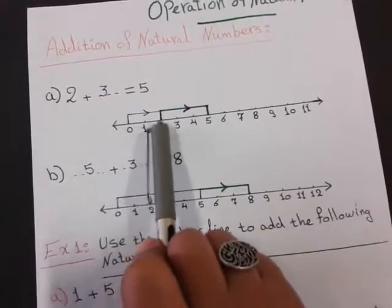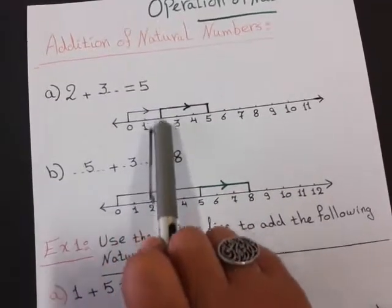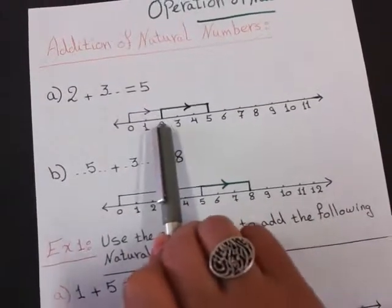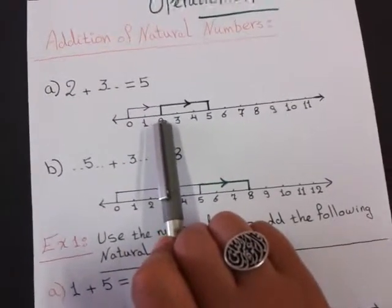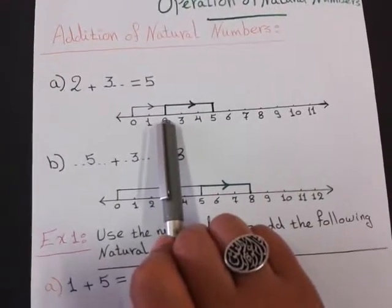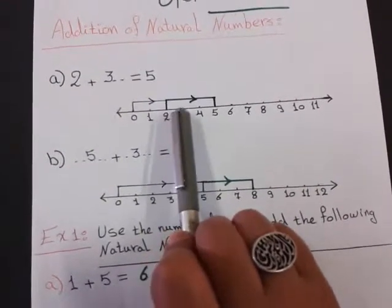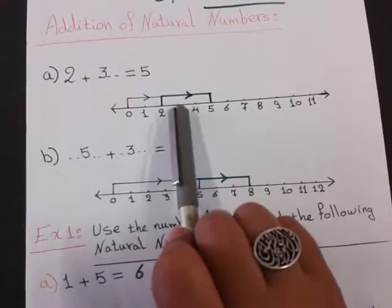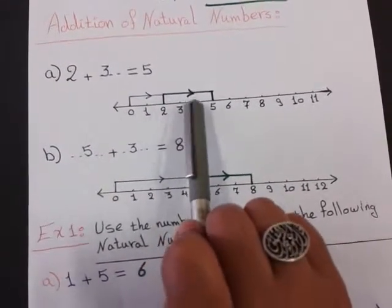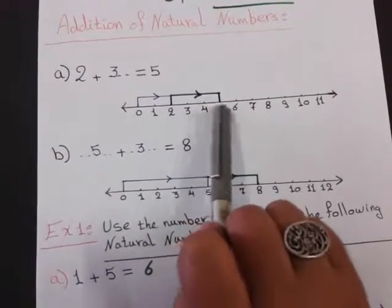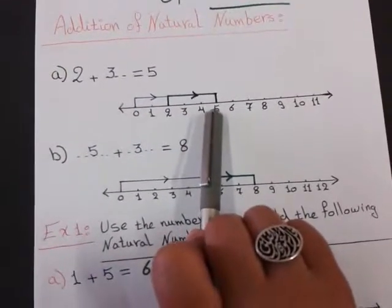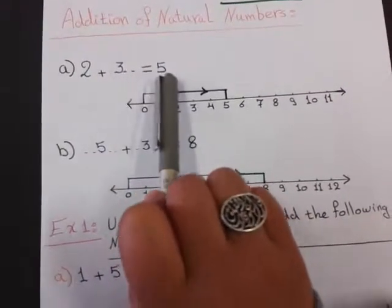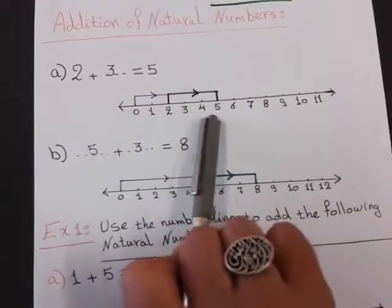I move one, two steps — so the first number is two. Then I look at how many units I need to move to reach number five. After two, I count: one, two, three — so I move another three steps to reach number five. Therefore, two plus three equals five, and this is what I find from the number line.